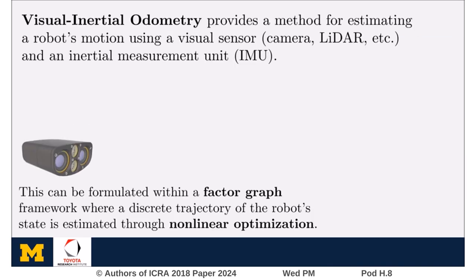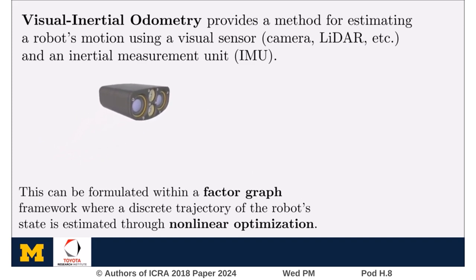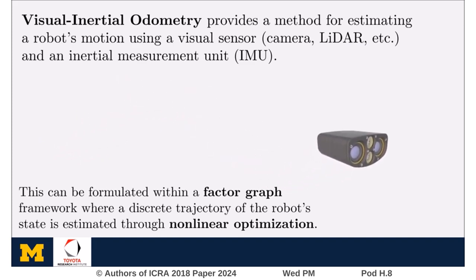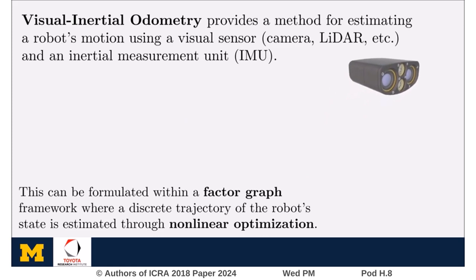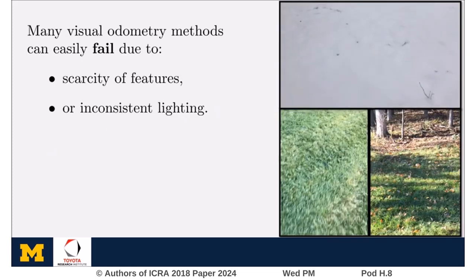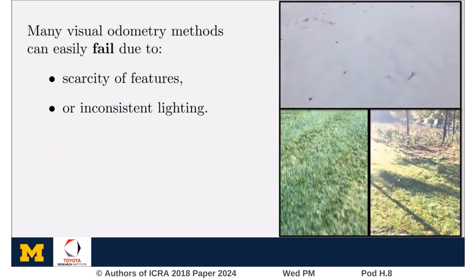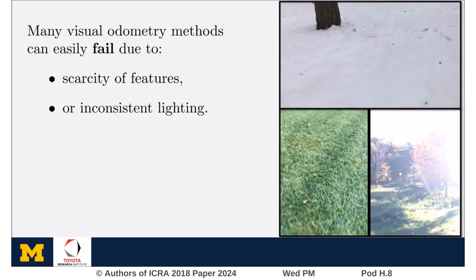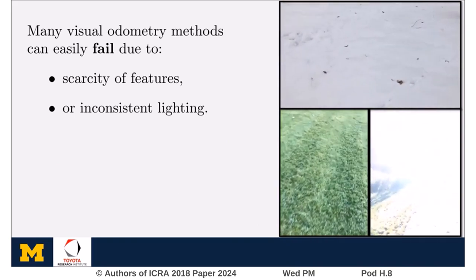There are many state-of-the-art visual inertial odometry methods that can combine visual information with inertial measurements to estimate a robot's trajectory. This odometry problem can be formulated within a factor graph framework where a discrete trajectory of the robot state is estimated using non-linear optimization techniques. However, many visual odometry methods can fail due to scarcity of features or when there is inconsistent lighting.